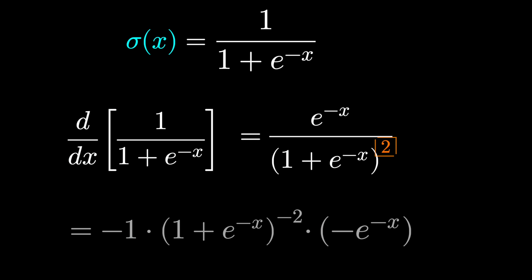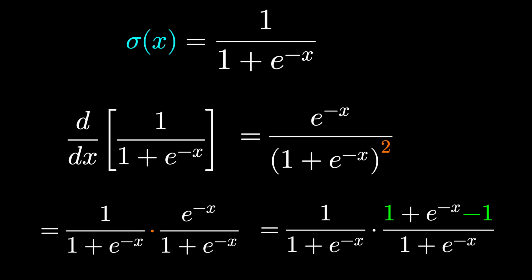A quantity squared means times itself, and I'm writing it like this for a very specific reason. If we do one more algebraic trick, adding and subtracting 1 in the numerator.